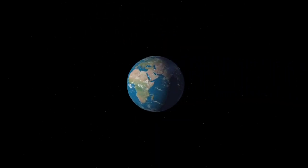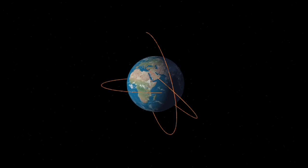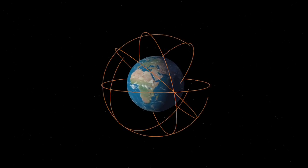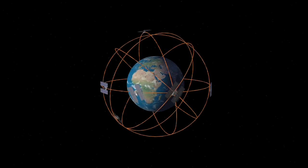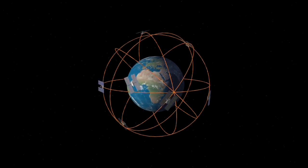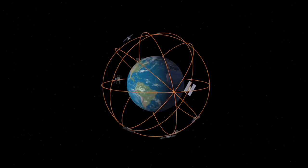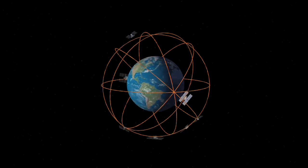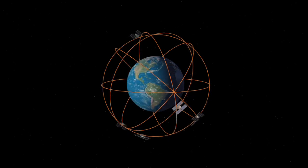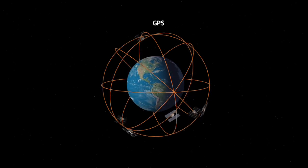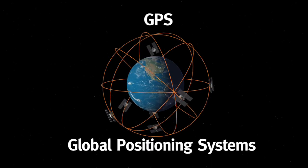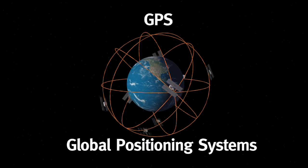It works like this. Data is spatial, meaning that each point is referenced to a specific geographical location on Earth. To collect spatial data we use navigation instruments such as GPS, or Global Positioning Systems.